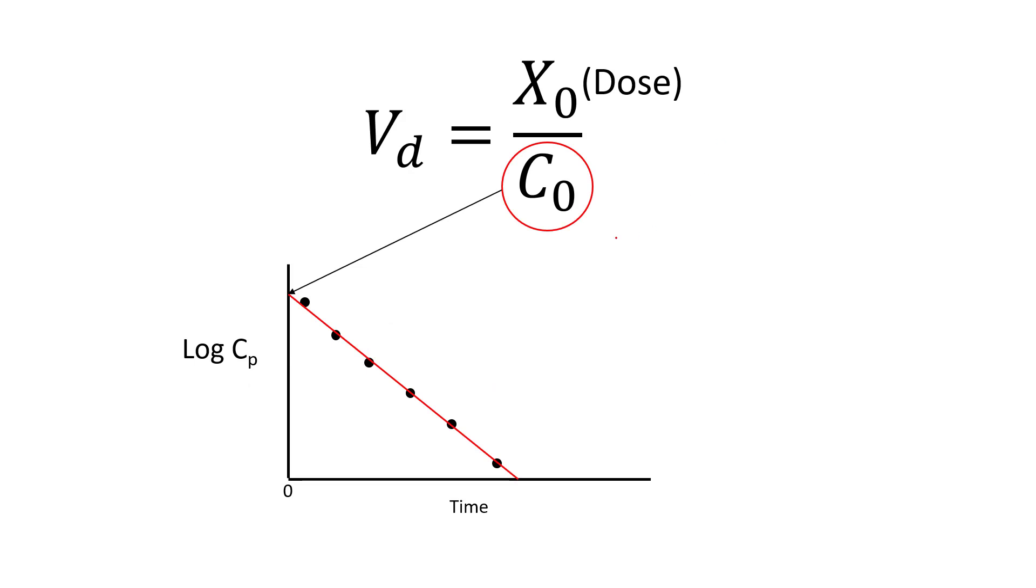So how do we do this in humans? Because unlike the experiment we just did, when we give it in a human, the amount is changed. As we said before, as soon as we give the dose, it's being eliminated. So the amount in the body is changing over time. So we can give a dose, we can measure concentration over time.